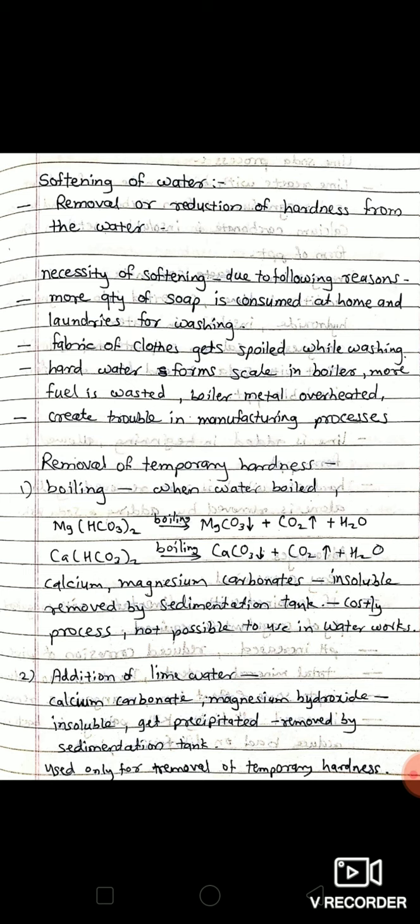Second method: addition of lime water. If the water of lime is added in the water which contains temporary hardness, it can be removed by adding the lime water. This method is used only for the removal of temporary hardness.